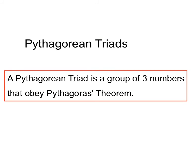So, for Pythagorean triads, the definition we'll remember is a group of three numbers that obey Pythagoras' theorem. It's a group of three numbers that work well with Pythagoras' theorem. Thanks for listening. Catch you next time. Bye-bye.